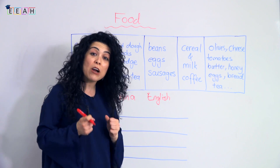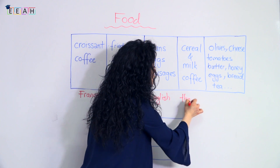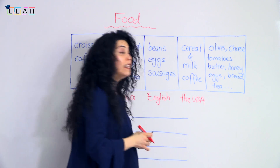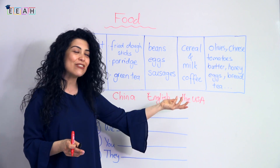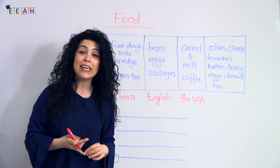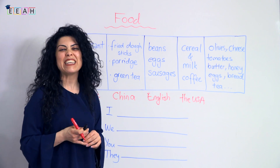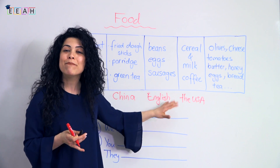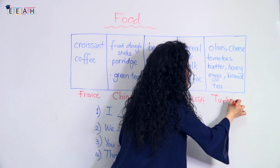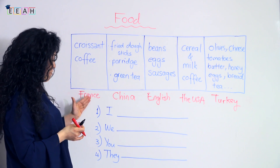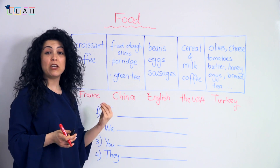Group four: cereal, milk, or coffee. This is a typical American breakfast — especially if you're rushing to work and you're in a hurry, you can have cereal and a cup of coffee. This is from the USA. The last group: we have olives, cheese, tomatoes, butter, honey, eggs, bread, and black tea. This is from Turkey — yes, this is a typical Turkish breakfast.